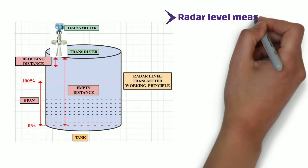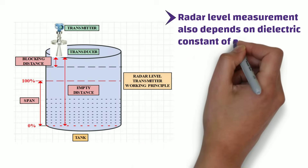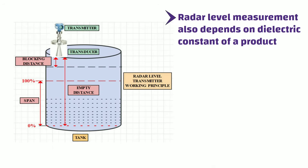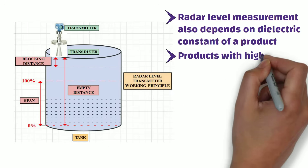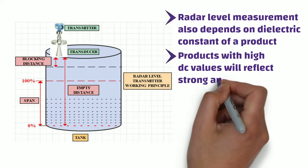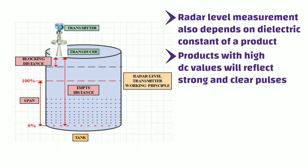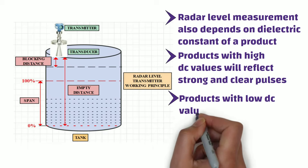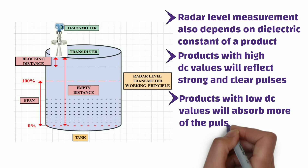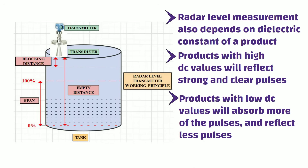Radar level measurement also depends on the dielectric constant of a product, as it has a direct impact on the quality of reflections. Products with high dielectric constant values will reflect strong and clear pulses, making them excellent for level measurement. On the flip side, products with low dielectric constant values absorb more of the pulse and reflect less, so radar level instruments do not give accurate level measurement for these products.